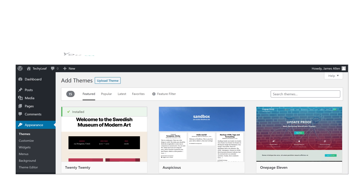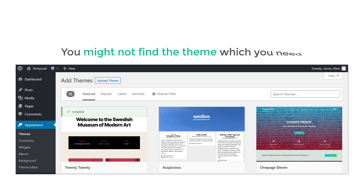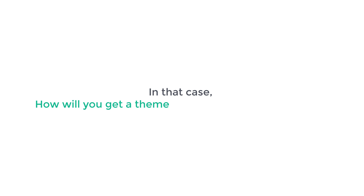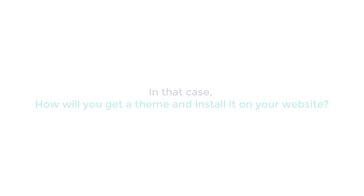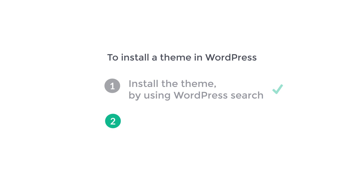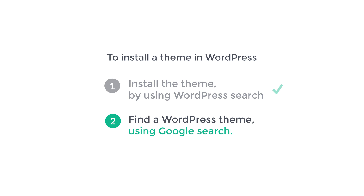Now sometimes you might not find the theme which you need on the WordPress search. In that case, how will you get a theme and install it on your website? So now let's look at the second method, which is to find a WordPress theme using Google search.